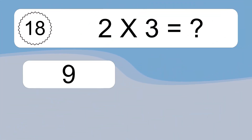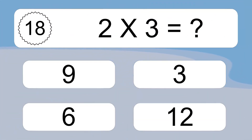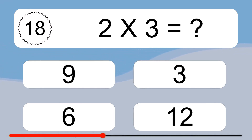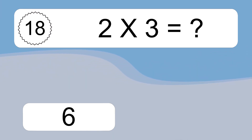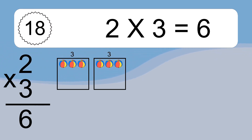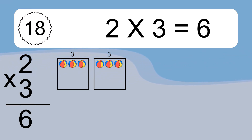2 times 3 equals what? 2 times 3 equals 6. We have 2 boxes, and each box has 3 colorful balls inside. If you count all the balls in all the boxes together, you will have 2 times 3 balls. This equals 6 balls.